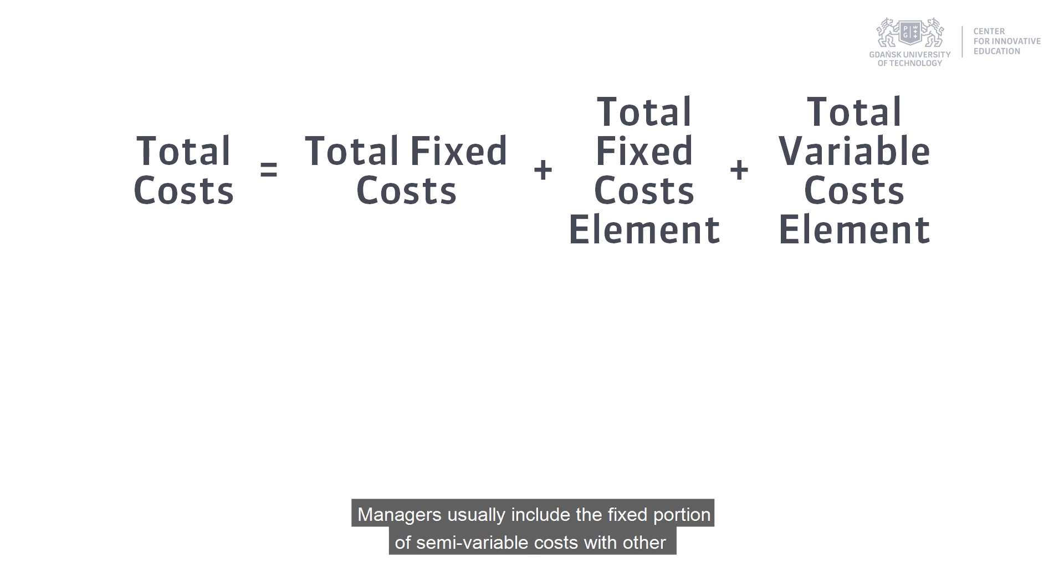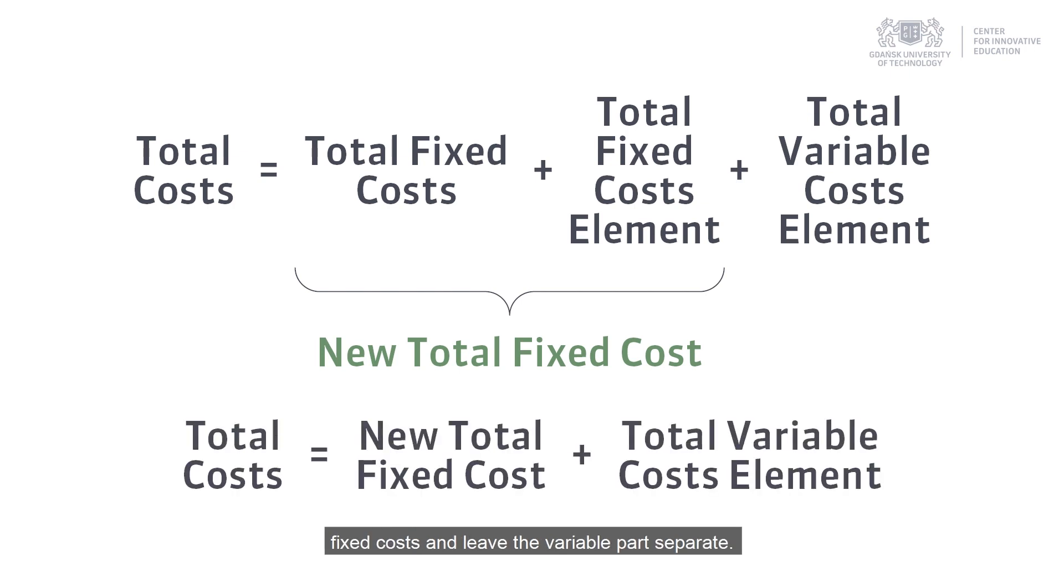Managers usually include the fixed portion of semi-variable cost with other fixed costs and leave the variable part separate. Then the formula will look like this.